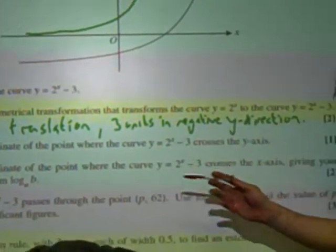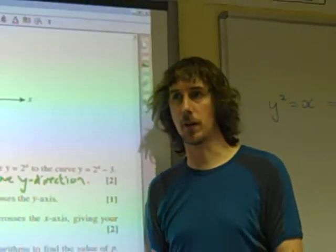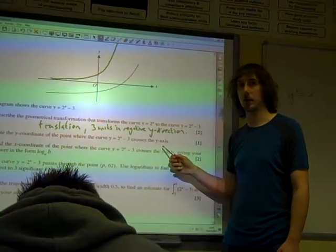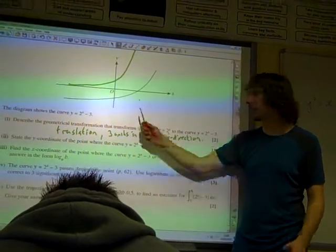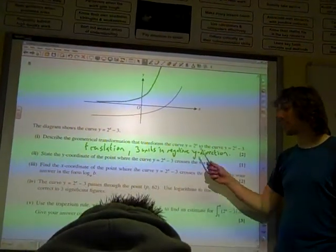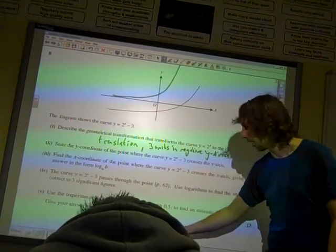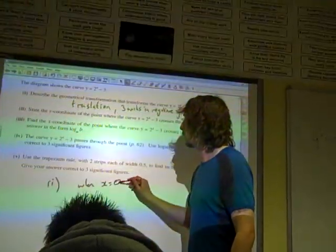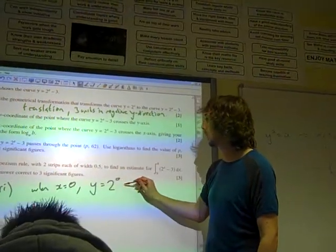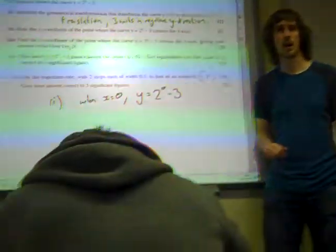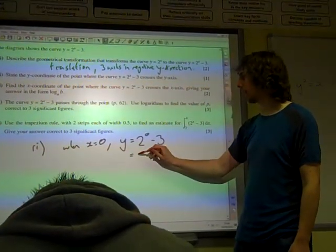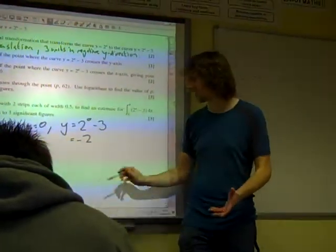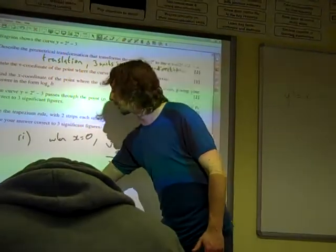Now this is where we start to get into having to do stuff with logarithms. Part 2, state the y-coordinate at the point where the curve crosses the y-axis. So, the point where it crosses the y-axis, this point down here, that's the point when x is 0, isn't it? For part 2, we are saying when x is 0, y equals 2 to the 0 minus 3. And even your calculator will sort that out for you. That's going to be the point minus 2. 2 to the 0 is 1, take away 3 is minus 2. That's why that was just one mark.